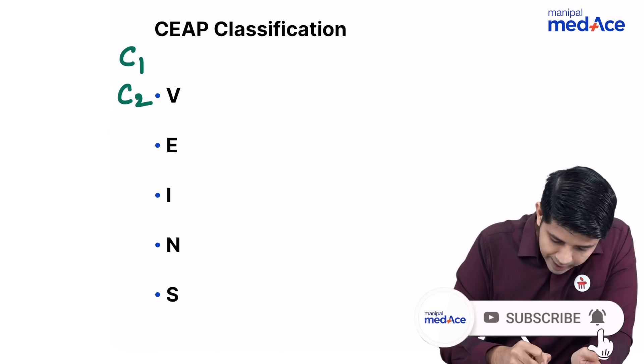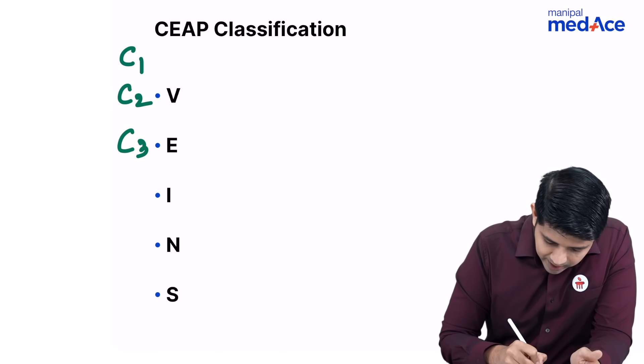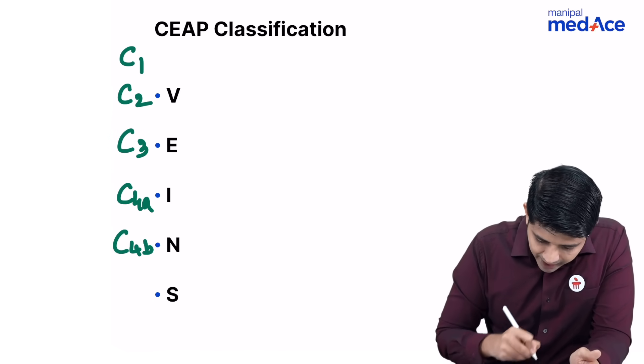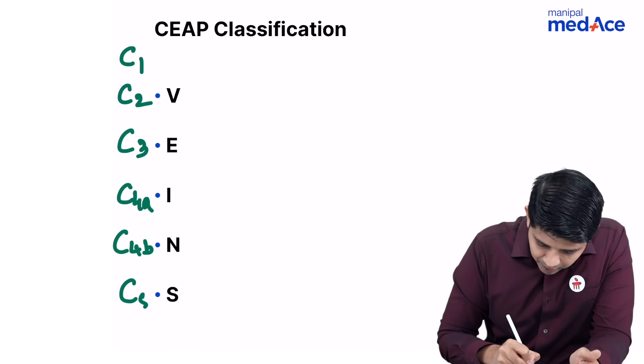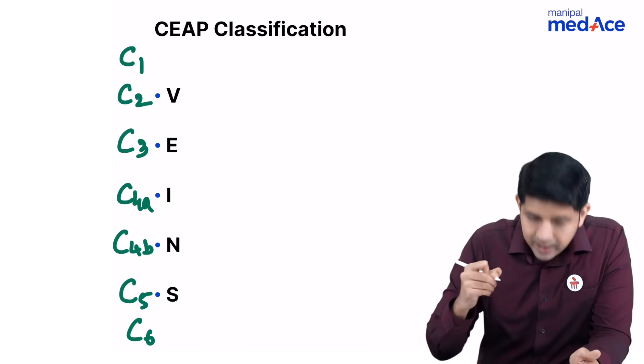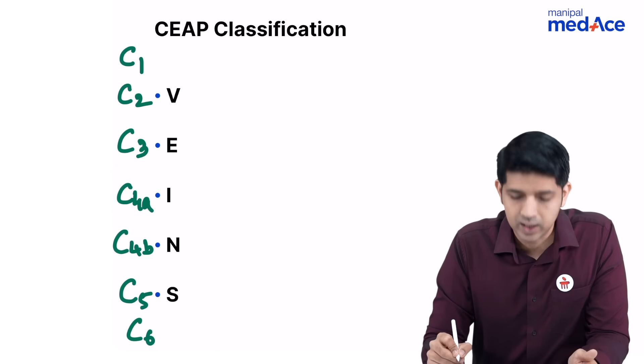So C2 is V, C3 is E, C4A is I, C4B is N, C5 is S, and write C6 below that.